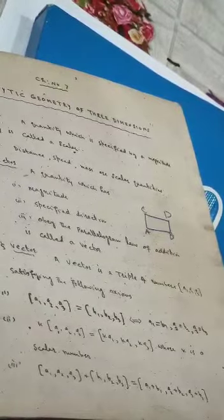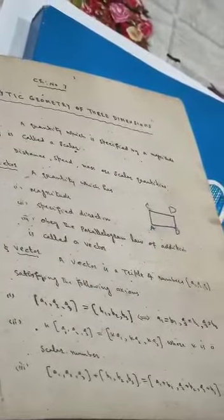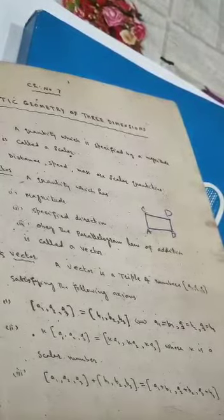The second definition of vector: a vector is a triple of numbers (A1, A2, A3) satisfying the following axioms. First axiom: vector (A1, A2, A3) is equal to (B1, B2, B3) if and only if A1 = B1, A2 = B2, and A3 = B3.